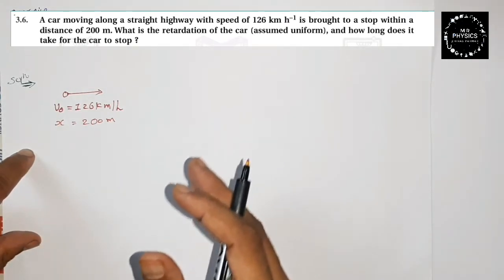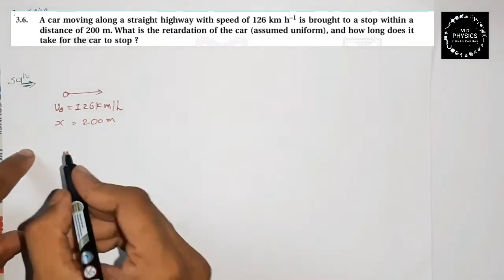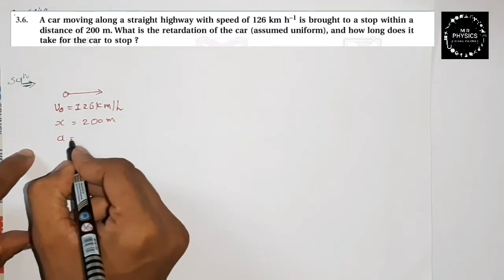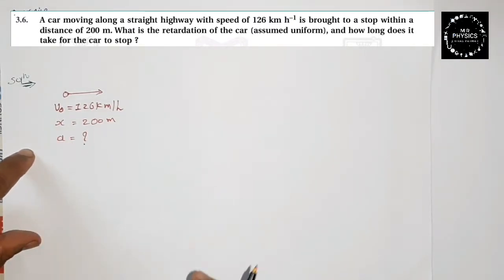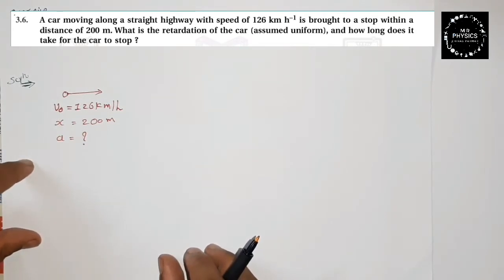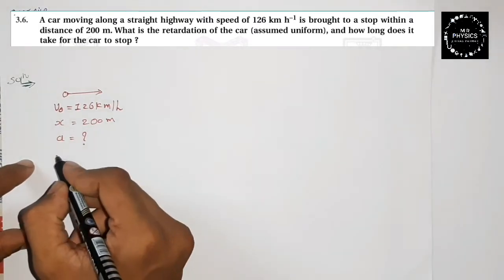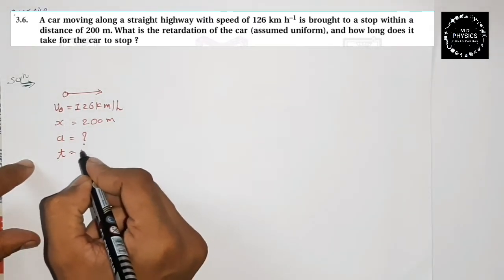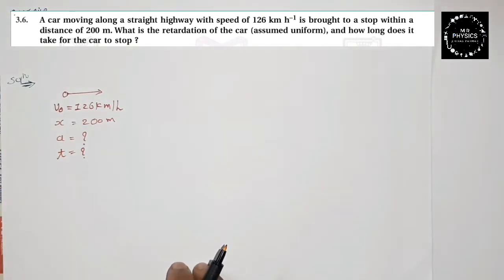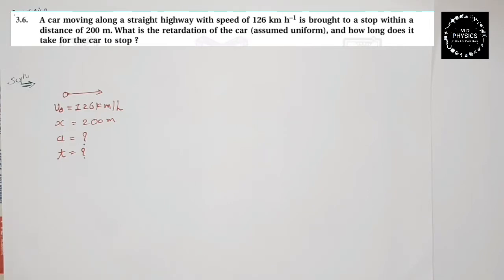To stop the car, the retardation — which is the acceleration — is what we need to find; that is question mark. And then, how long does it take for the car to stop? The time t is also question mark. These are our two unknowns. It's quite simple; almost everything is already given to us.